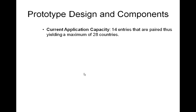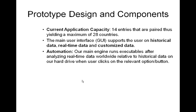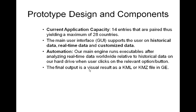Now Lawrence will explain more on the components of the prototype. The prototype has a current capacity of 14 entries, which are paired, yielding a maximum of 28 countries. The main GUI supports the user on historical data, real-time data, and customized data. Automation refers to the main engine that runs executables after analyzing real-time data worldwide relative to historical data on our hard drive when the user clicks the relevant option button. The final output is a visual result as a KML or KMZ file in Google Earth.